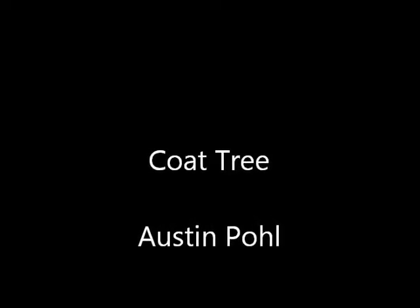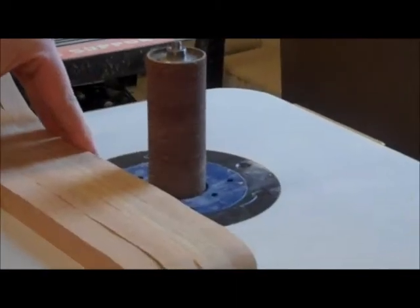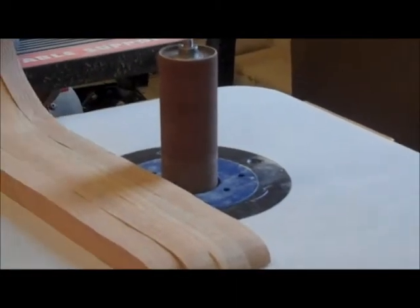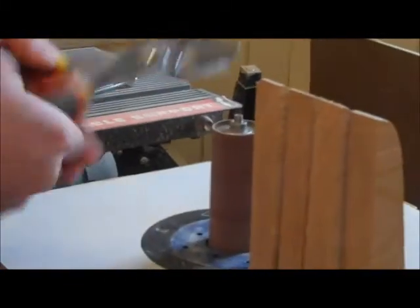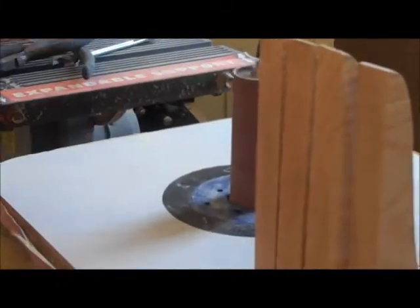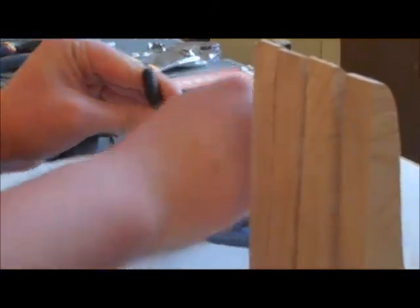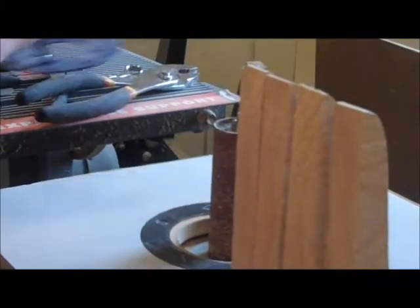All right, this is Austin Pole. My wood project happened to be a coat tree or a coat rack. This year I was trying to sand one of my main pieces, the corbels, and I had a problem with a circular sander. So I'm trying to fix it and it happened to be an absolute pain.